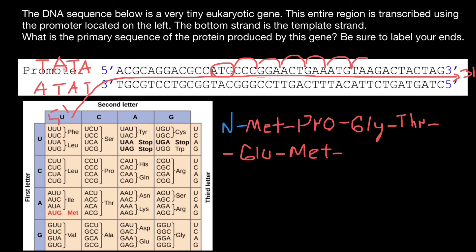The next codon is TAA. In messenger RNA, this is going to be UAA. Let's find UAA in the table — this is a stop codon. So this is going to be the stop codon and it's not going to be translated. We are also going to have the carboxylic acid end here, or we say C-terminus. So as you see, we have given the primary sequence of the protein and also labeled our ends. Even if we flip this sequence and start with the C-terminus, you would still be able to find that the correct order is from N-terminus to C-terminus. This is the first amino acid and this is going to be the last one.